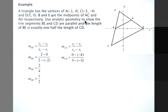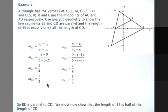For CD, 0 subtract negative 4 over 5 subtract negative 3 gives us 4 over 8, which reduces to 1 half. Since the slopes are the same, BE is parallel to CD. Now all we need to show is that the length of BE is half the length of CD.